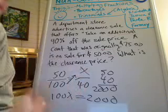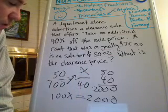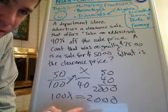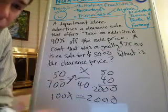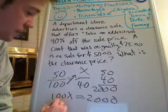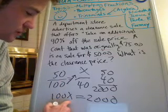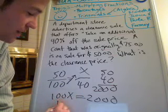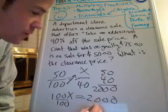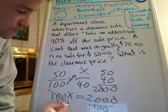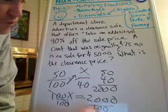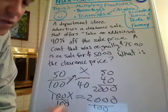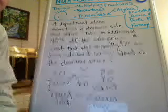Algebraically, I need to get X alone. X is being multiplied by 100, so I divide both sides by 100 to do the opposite operation. That gets rid of the 100 on the left side, and I have 2000 divided by 100 on the right side.